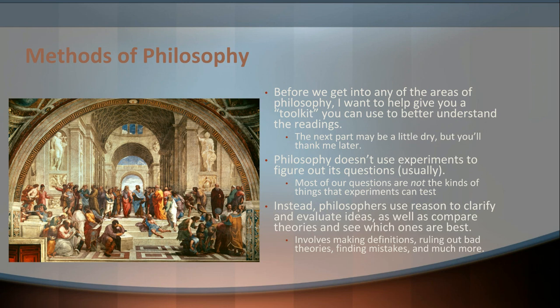That process involves clarifying definitions, ruling out bad theories, finding mistakes. Essentially it's like a process of elimination with a very rigorous standard, where different people propose different ideas about a subject, and then we take those proposals and compare them, clarify them, define them, and see whether or not they actually fit together with the rest of what we know and whether or not we can rationally believe in them. So when we talk about the methods of philosophy, we're looking at what standards and tools should we be using to evaluate ideas.